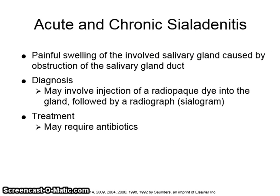Acute and chronic sialadenitis is a painful swelling of the involved salivary gland caused by obstruction of the salivary gland duct. Diagnosis may involve injection of a radiopaque dye into the gland followed by a sialogram. Treatment may require antibiotics.